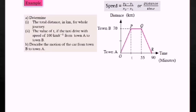Next example: determine the total distance in kilometers for the whole journey. From town A to town B is 70 kilometers. The car then stops (stationary) and then goes back from town B to town A. The total distance equals 70 plus 70, which equals 140 kilometers.